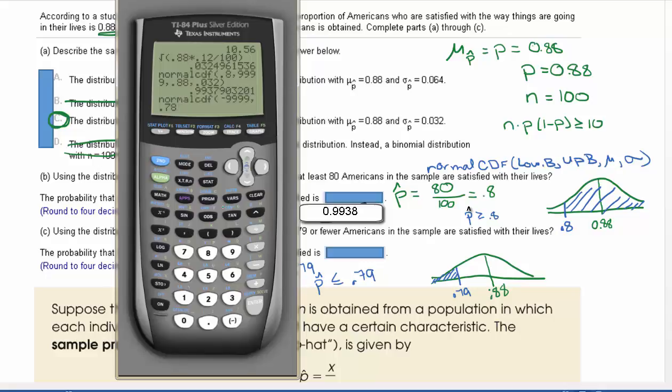Up to 0.79, so that's our upper bound. Let me get the right numbers in there, 0.79. We have a mean of 0.88 and a standard deviation of 0.032. That's going to give us 0.002457 and so on. We're going to four decimal places, that'll be 0.0025.